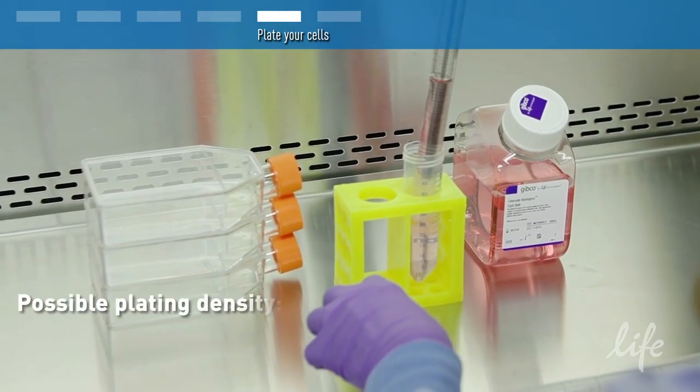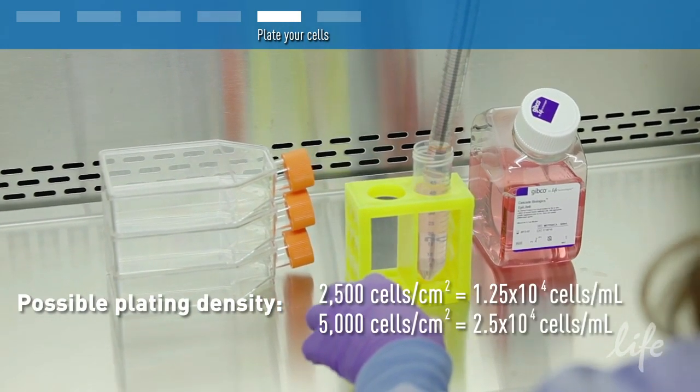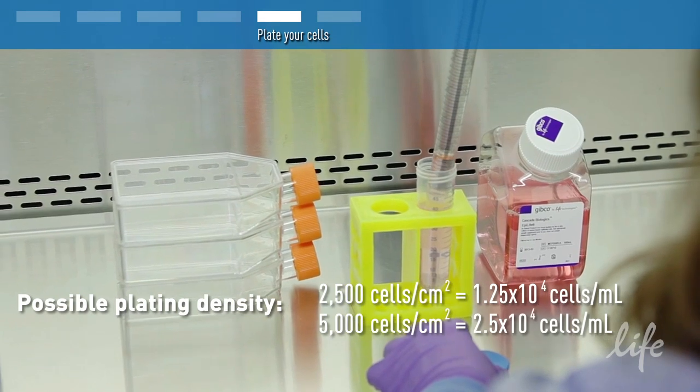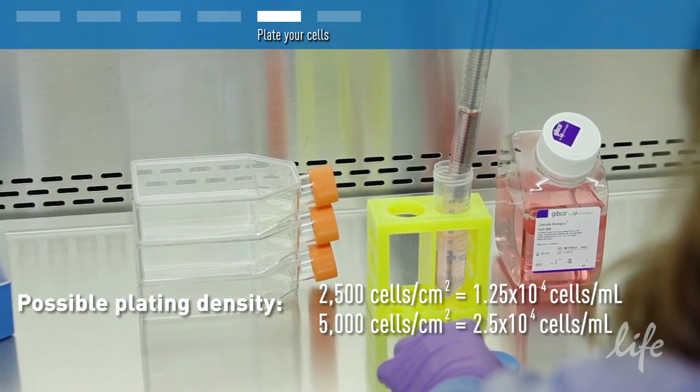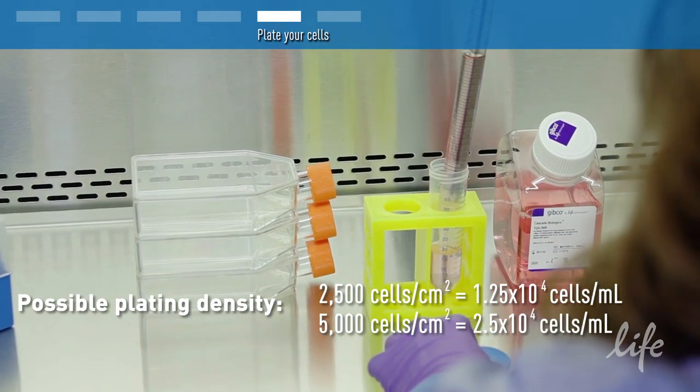Finally, use the supplemented media you prepared earlier to dilute the cells to the recommended plating density. This is typically 2,500 to 5,000 cells per centimeter squared.